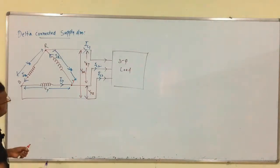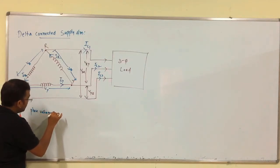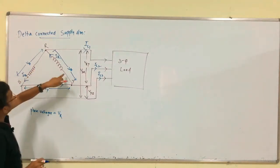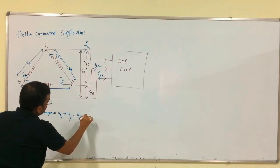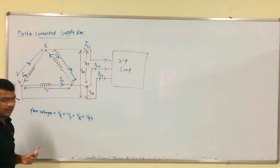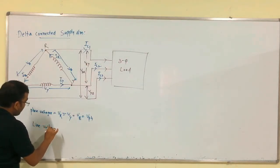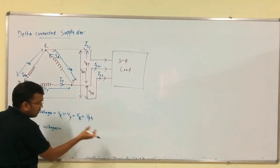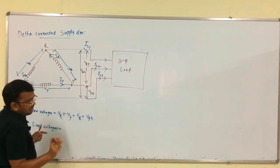In this case, first we write the phase voltages: V_R = V_Y = V_B = V_phase. The magnitude is the same, but the angles are 0 degrees, minus 120, and minus 240 degrees — that is the difference.